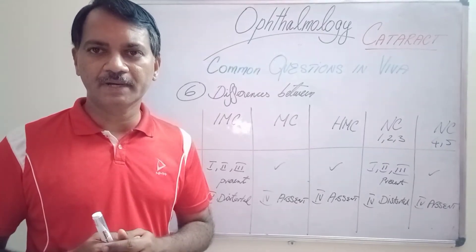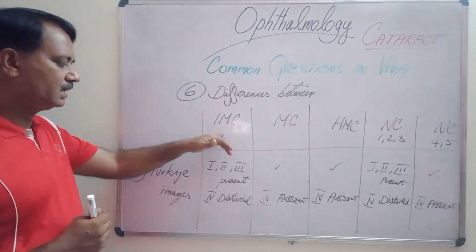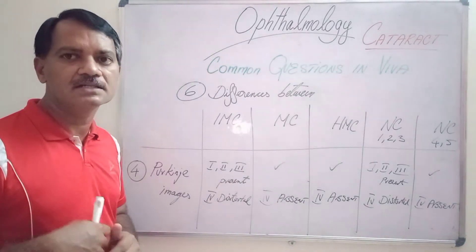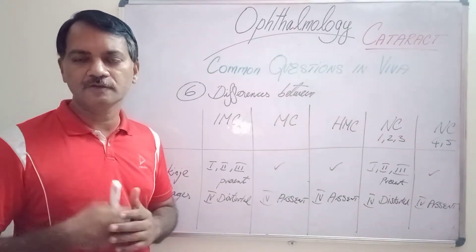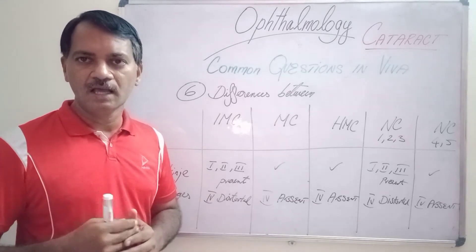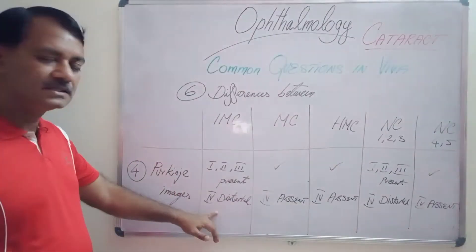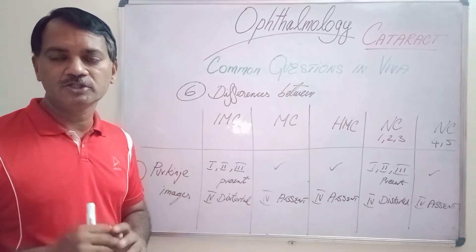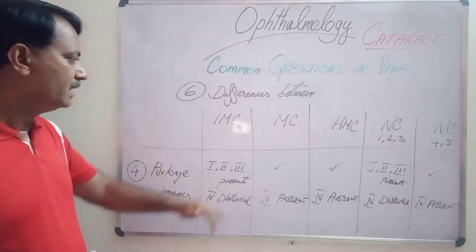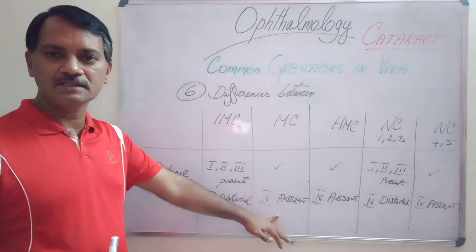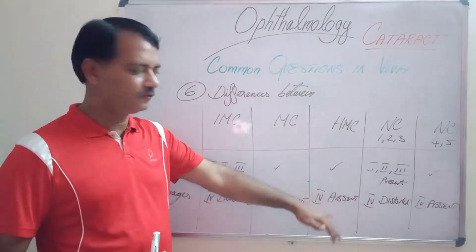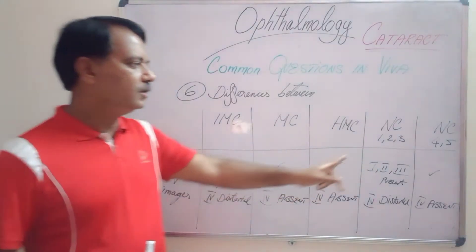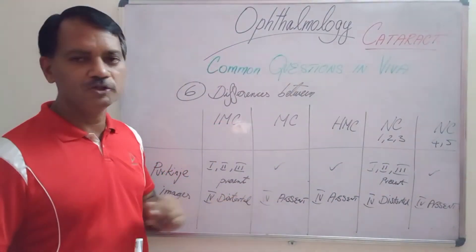Talking about the differences in the Purkinje images: in immature cortical cataract, images 1, 2 and 3 — reflections from the anterior surface of the cornea, posterior surface of the cornea, and anterior surface of the lens — will be seen. The 4th image, which is the reflection from the posterior surface of the lens, is distorted and not clear. In mature cataract, the 4th image is absent. In hypermature cataract, the 4th image is also absent. In nuclear cataract, it is similar to immature cortical cataract. In nuclear cataract grade 4 and 5, it is similar to mature cataract.